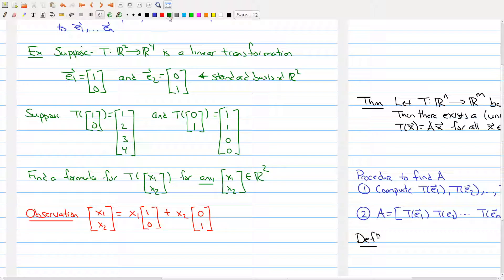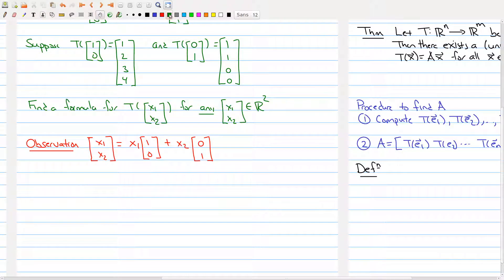So how does this help us in order to figure out our formula? Well, let's say that you're interested in knowing what T(x1, x2) is. By the observation, this is the same thing as knowing what the linear transformation does to this vector. We've kind of blown this vector apart.